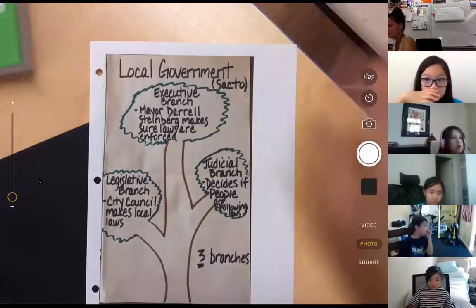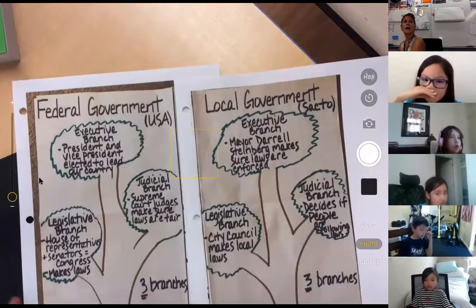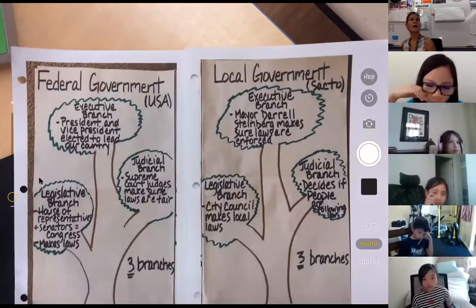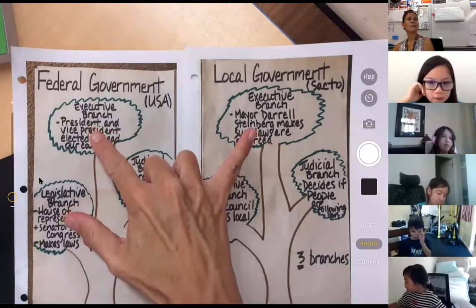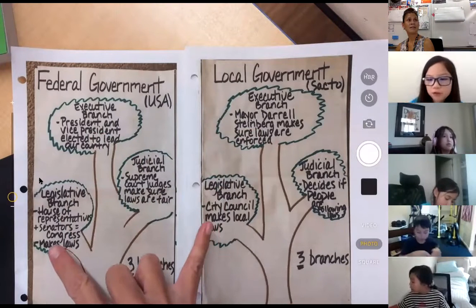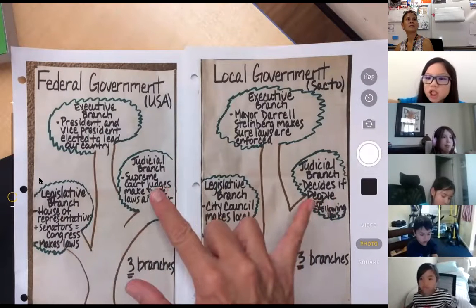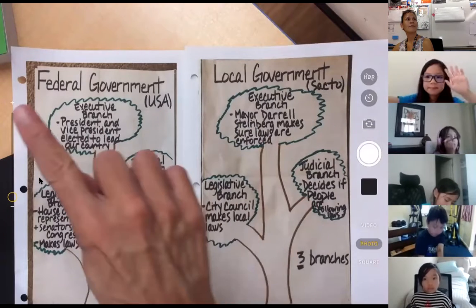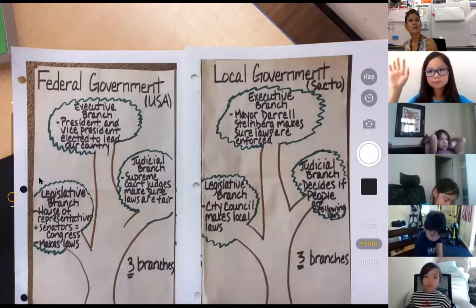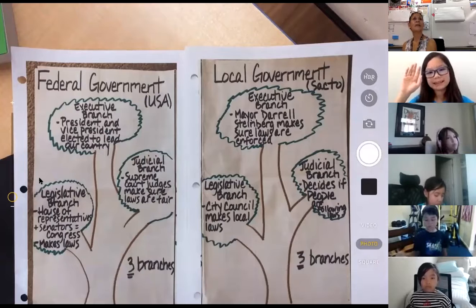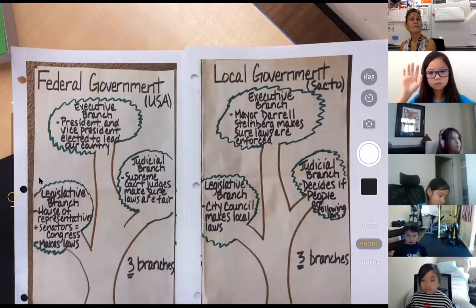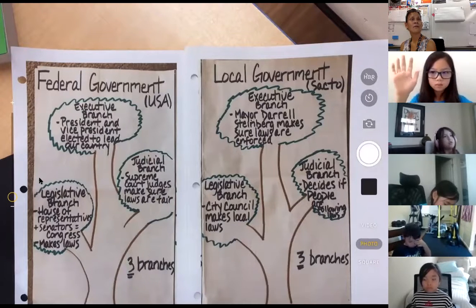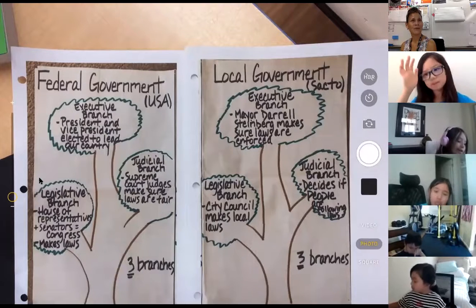What I want to do is show you side by side how our federal government and our local government are similar. Both the federal government and the local government have executive branches. They both have legislative branches. They both have judicial branches. Again, the federal and the local both have executive branches, legislative branches, and judicial branches. I'm going to give you just another couple of minutes to make sure you have all of that written down. Isis, I see your hand — it'll be just a minute. When I stop sharing my screen, I will come back to you.